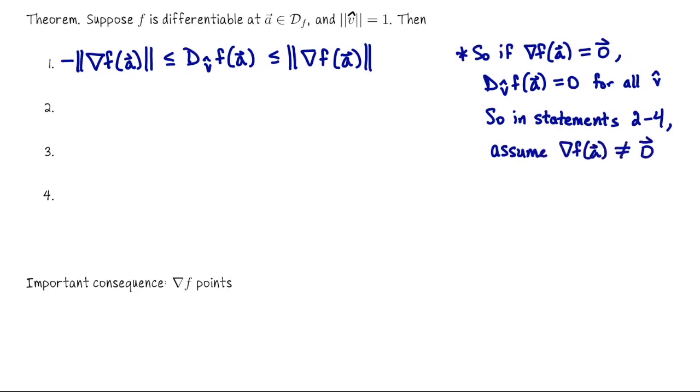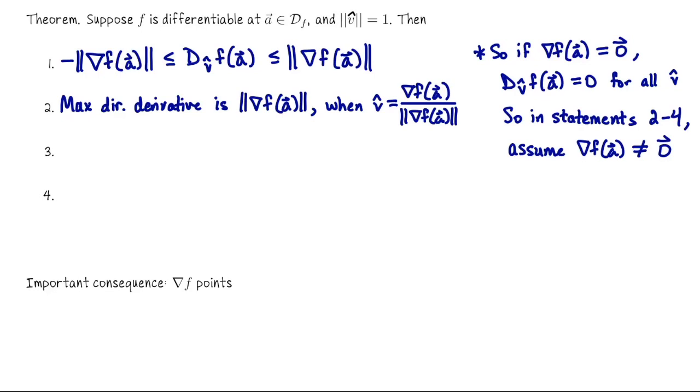In that case, what is the largest directional derivative that we could possibly have at the point a? And the answer is it's the length of the gradient, some positive number since we're assuming the gradient is not the zero vector. And when would we get that directional derivative? What direction would I have to walk? And the answer is you would walk parallel to the gradient so that cosine of θ was one, in other words θ was zero. So if you walk in the direction indicated by the gradient vector, that will give you the greatest increase in your function from the point a.